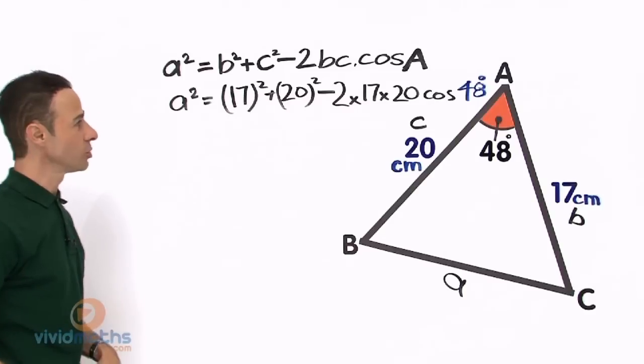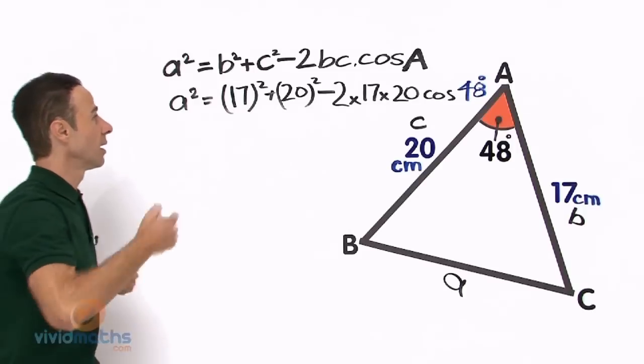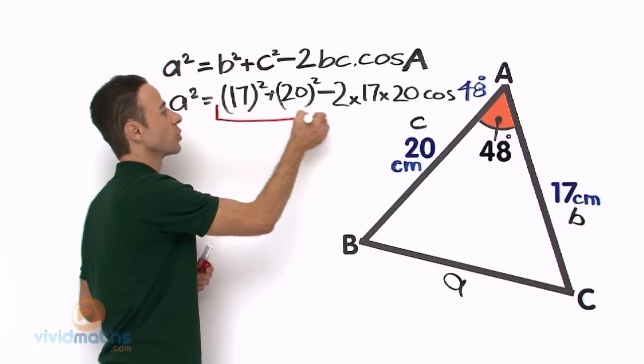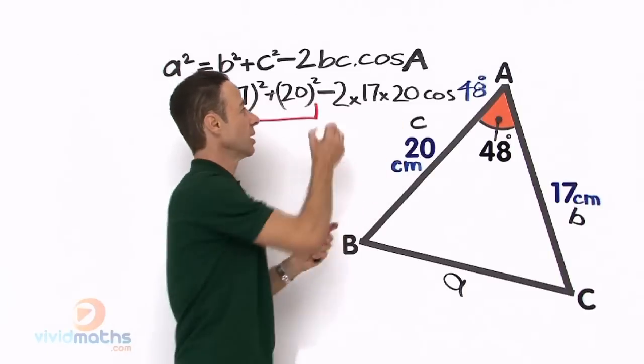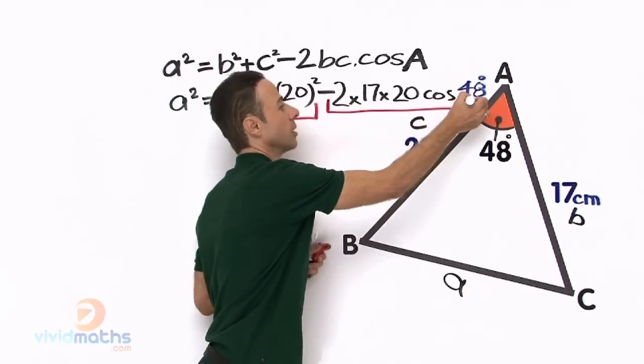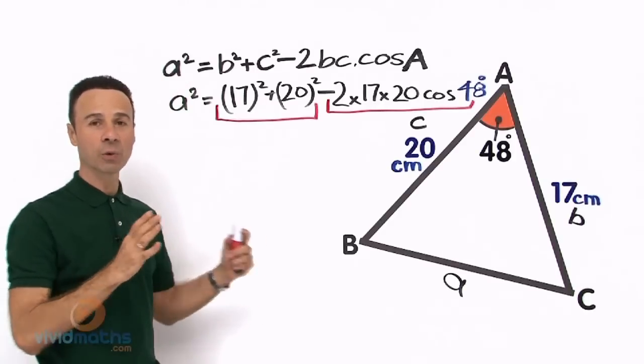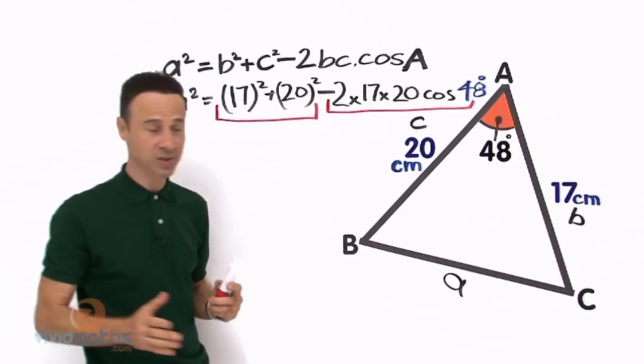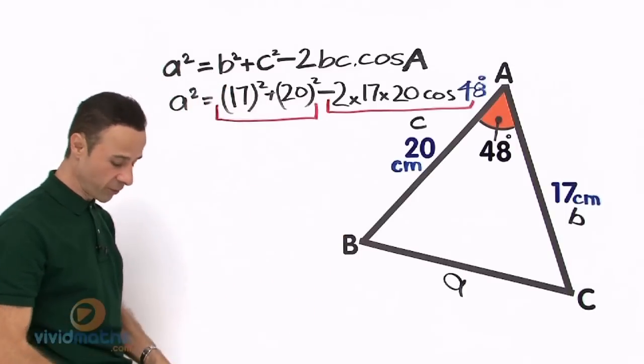Now, there are two sections to this formula, and we are going to separate them in the two sections. The first section here is this part here, the 17² and the 20². Then we have the other section here, right there, the second part of the train or the second carriage. And we are going to keep them separate until finally we subtract one from the other because, as you can see, we have a minus sign there. So let us work out the section here on the left first of all.